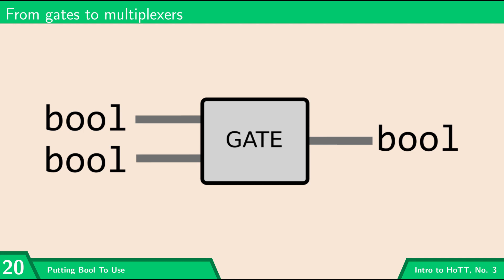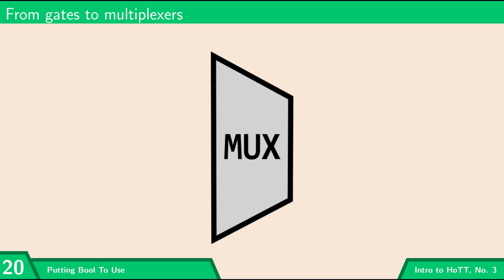To do that, we're going to think about what are called multiplexers. Multiplexers are kind of a generalization of logic gates in that they have a little bit more of a function. When we transport multiplexers into the context of homotopy type theory, they're going to correspond to a really important part of our type theory called iteration.